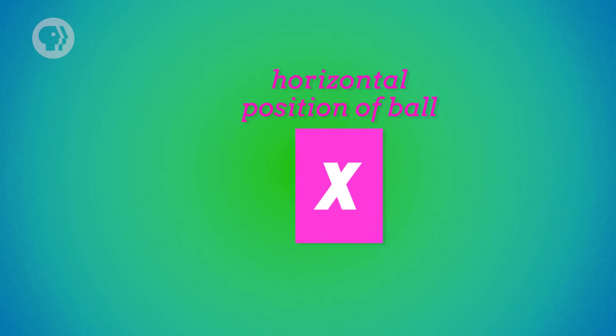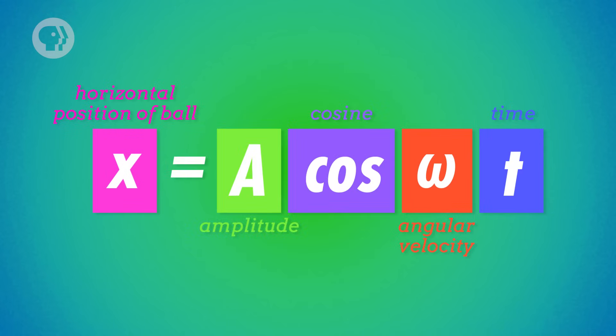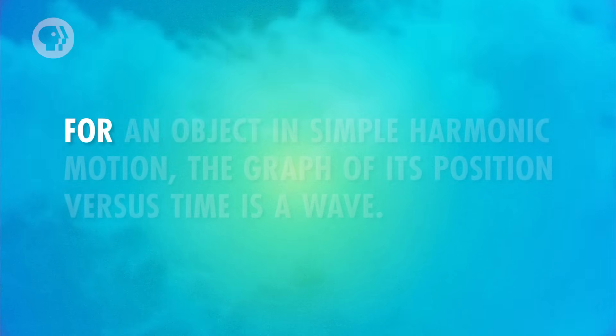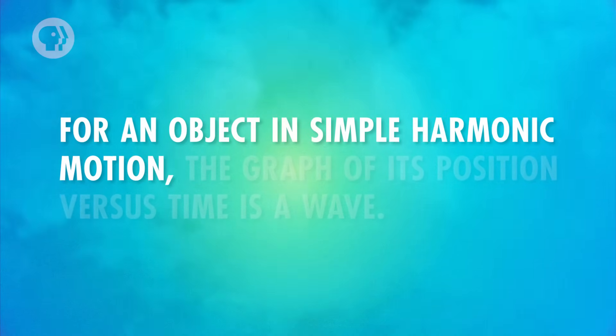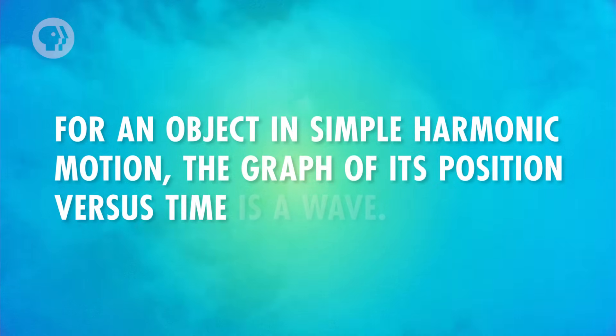And we can simplify this equation, too. In the same way that distance is equal to velocity multiplied by time, the angle is equal to the angular velocity multiplied by time. So we can write the equation for the position of the ball as x equals a cosine omega t. And when you graph this equation, something interesting happens. It looks like a wave. We'll be talking a lot more about waves in our next three episodes, but for now, it's helpful just to see the connection here. For an object in simple harmonic motion, the graph of its position versus time is a wave.